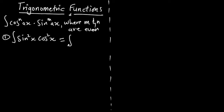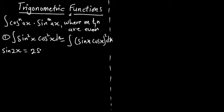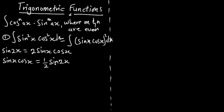Remember, sin²x·cos²x can be written as the integral of (sinx·cosx)² dx. From the double angle trig identity, sin2x is equal to 2·sinx·cosx. Therefore, sinx·cosx is equal to ½·sin2x.